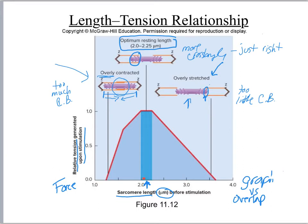Looking at the graph, the sarcomere length corresponds to the physical illustration. Between a certain range is the optimal length. The graph shows that when you're at this optimal length, you get the most amount of force. When there are too many cross-bridge attachments and it's too short, you get far less strength. And when it's overly stretched, it takes longer to move and never hits the same peak.